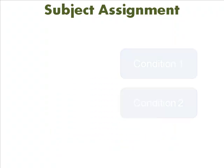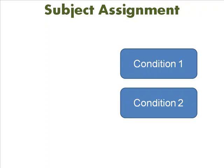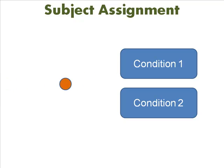In some experiments, subjects must be assigned to treatment. You have to determine who gets the real drug and who gets the placebo. You could go every other one, or first-come first-served, but those patterns are not random enough. You want to avoid even quasi-patterns.